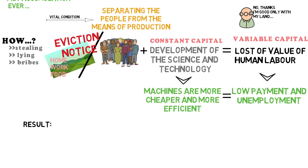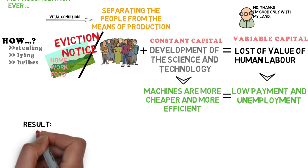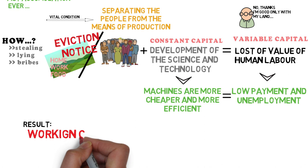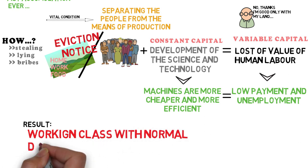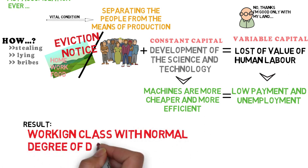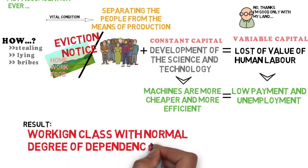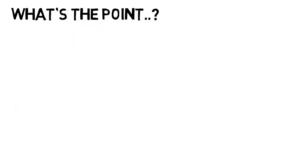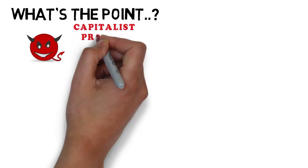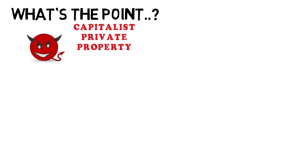That created a working class with a normal degree of dependency. Who cared that they died like ants and lived in misery? The accumulation was flourishing. The main point for Marx in looking into this subject is actually his conclusion that the capitalist's private property is a devil's creation.